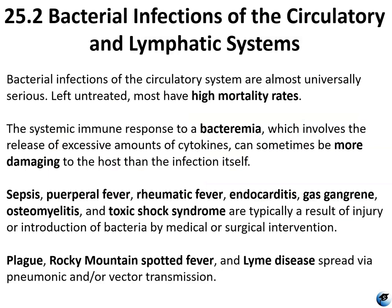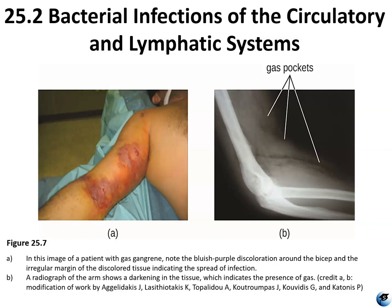Bacterial infections of the circulatory and lymphatic system are almost universally serious. Left untreated, most have very high mortality rates. The systemic immune response to bacteremia, involving the release of excess cytokines, can sometimes be more damaging to the host than the infection itself. Sepsis, puerperal fever, rheumatic fever, endocarditis, gas gangrene, osteomyelitis, and toxic shock syndrome are typically results of injury or bacterial introduction via medical or surgical intervention. Plague, Rocky Mountain spotted fever, and Lyme disease spread via zoonotic and/or vector transmission.